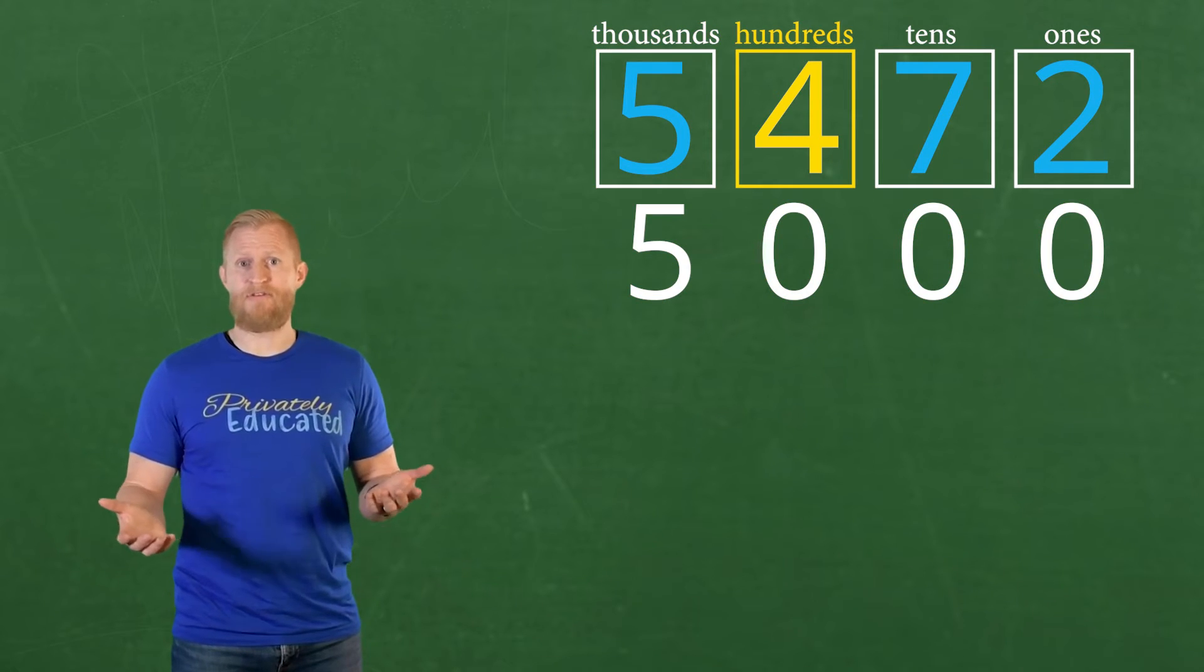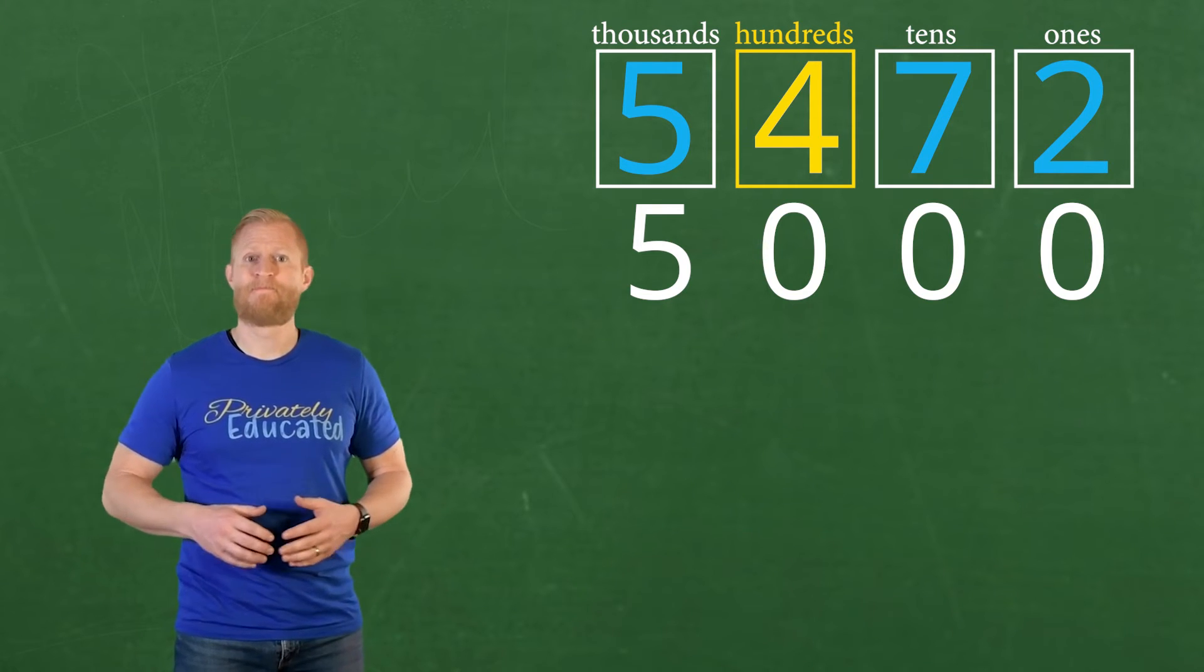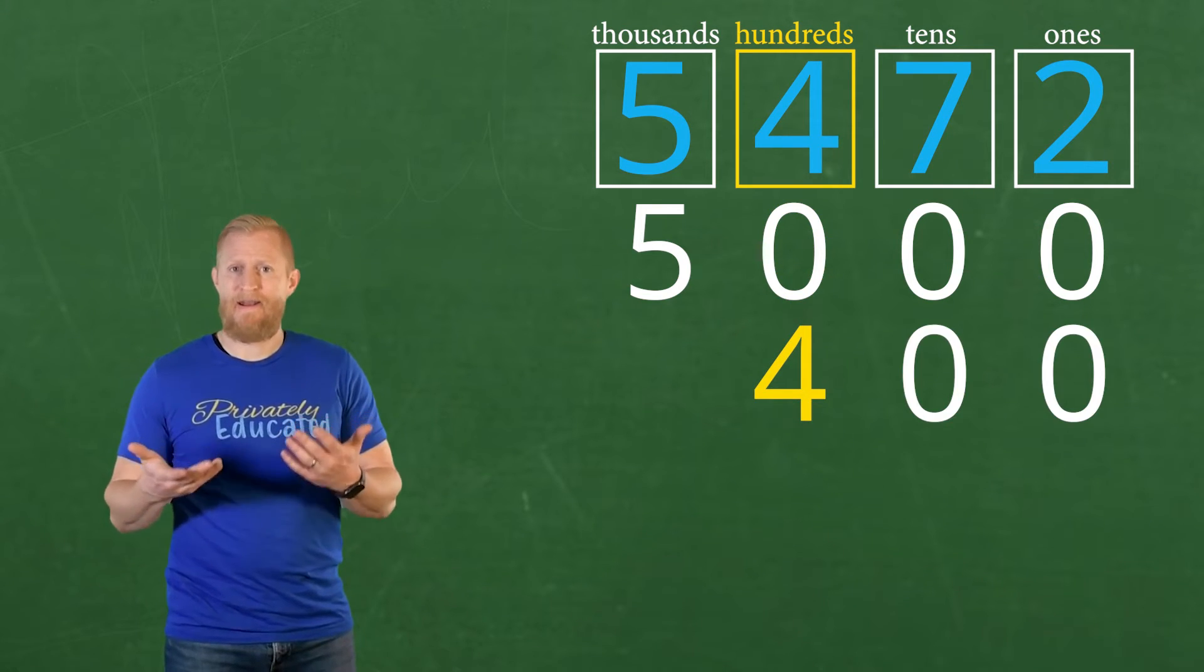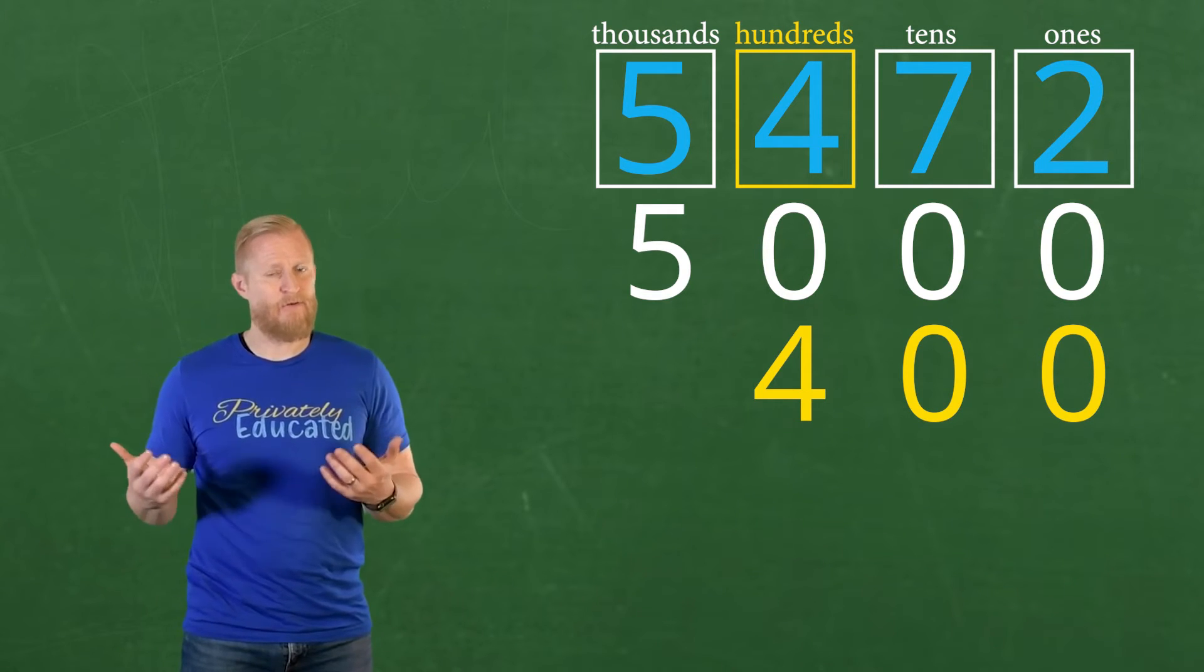Now let's do the hundreds group, since it's the next biggest place value. We pull down the four and add zeros in the other place values, just like we did for the 5,000.